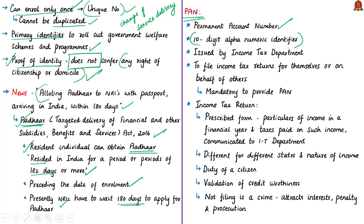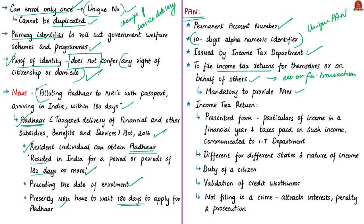PAN stands for Permanent Account Number — it is a 10-digit alphanumeric identifier issued by the Income Tax Department. Each entity — any individual, firm, or company — is issued a unique PAN. All existing taxpayers or persons required to file a return of income must have a PAN, even if they file on behalf of others. Any person who intends to enter into economic or financial transactions where quoting PAN is mandatory must also have a PAN. It is compulsory to quote PAN on the return of income.